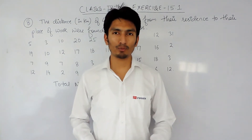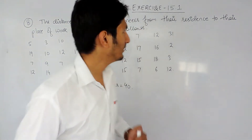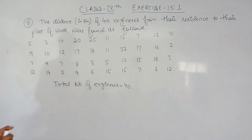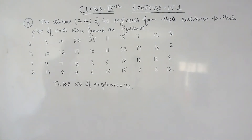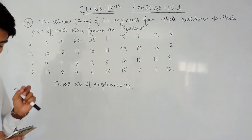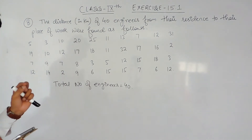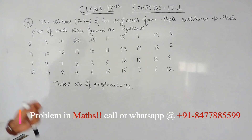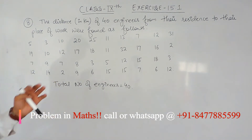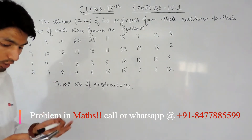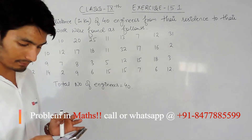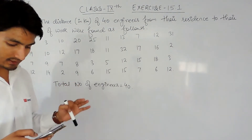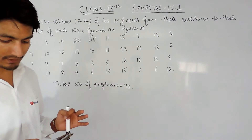Hello everyone, we are from True Maths and in this video we are going to solve question number 8 of exercise 15.1. The question says: refer to question number 2 of exercise 14.2 — what is the empirical probability that an engineer lives in the first case less than 7 km from her place of work, in the second case more than or equal to 7 km from her place of work, and in the third case within half km from her place of work.